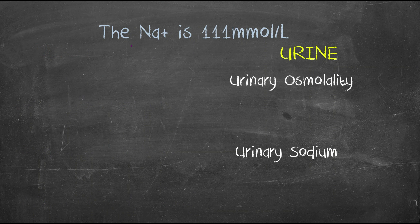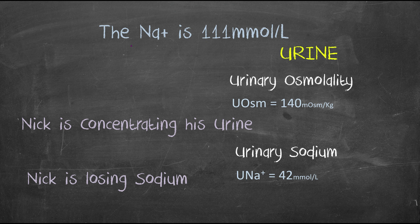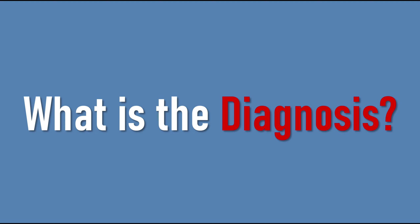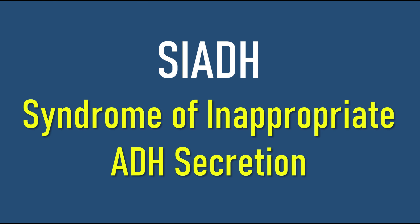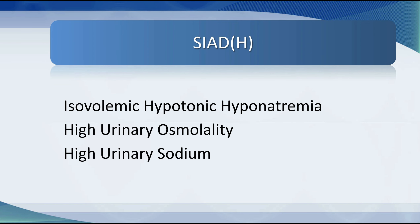In this setting it's imperative that we look at his urine. His urinary osmolality is 140 milliosmoles per kilo — so Nick is concentrating his urine. His urinary sodium is 42 millimoles per liter — so Nick is losing sodium. Where the creatinine is normal, the urinary sodium is relatively high, and urinary osmolality is high, the principal diagnosis you must consider is the syndrome of inappropriate antidiuresis — SIAD.